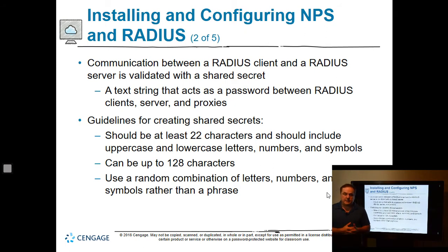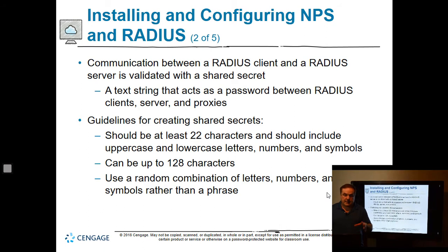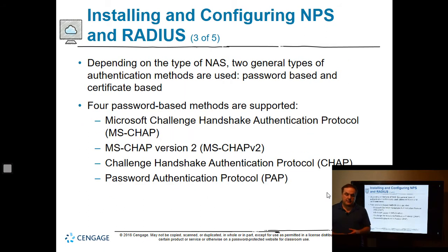Communication between a RADIUS client and a server is validated using a shared secret. So you not only have your Windows username and password, but you also have your RADIUS password as well. It should be at least 22 characters and should include uppercase, lowercase, numbers, and symbols, and can be up to 128 characters. It doesn't have to be using 22 characters unless you set up a group policy that says it does. Depending on the type of NAS, two general types of authentication methods are used: password or certificate.